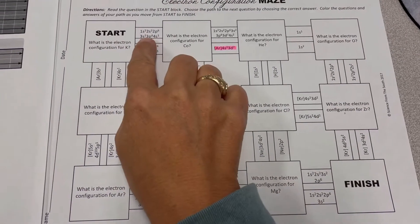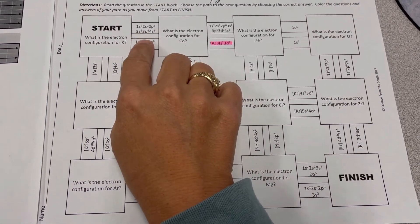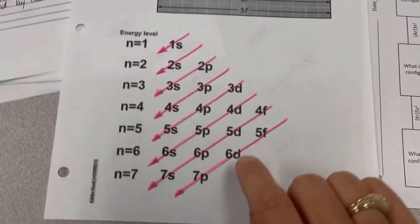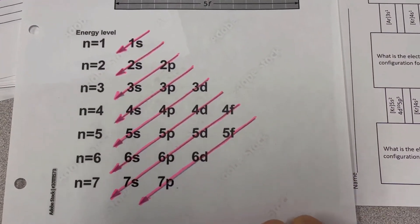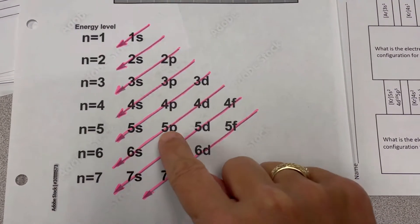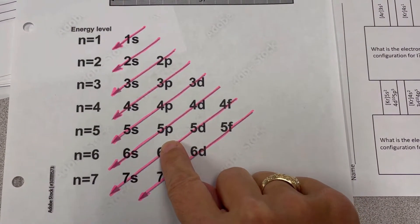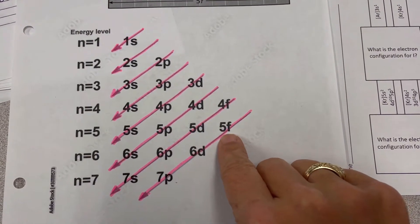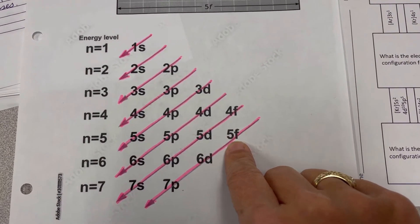So if you'll remember, we have electron configurations. We worked on these on Friday. We got these by following this chart. We know that your S sublevels can only hold two electrons, P's can only have a total of six, D's ten, and then F's could hold a total of fourteen.